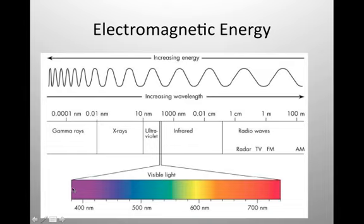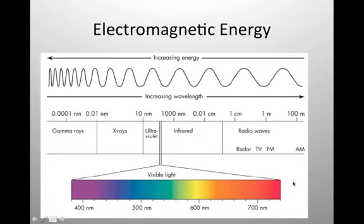The rainbow is ROYGBIV — red, orange, yellow, green, blue, indigo, violet. If you go further toward higher energy from violet, you get ultraviolet, UV. And if you go to lower energy from red, you get infrared. A lot of the energy that humans and mammals release as heat is released in the form of infrared energy — energy released as heat rather than light.